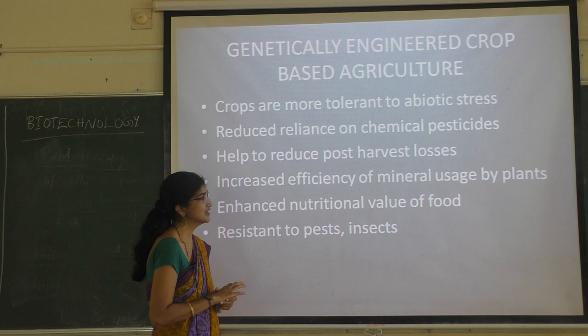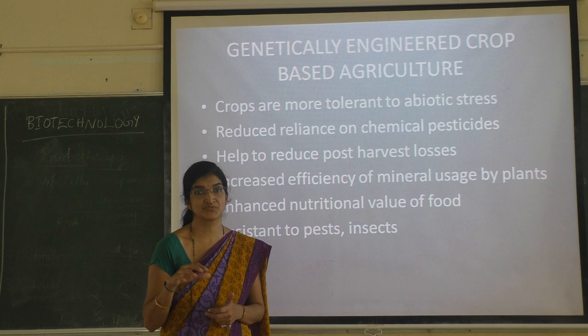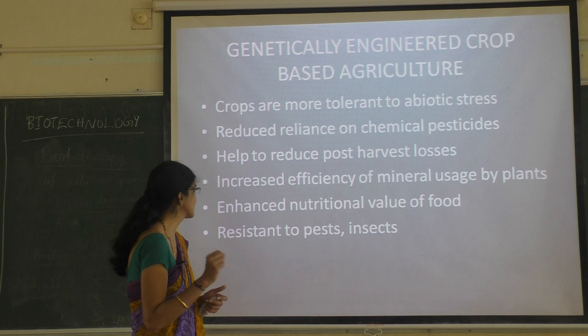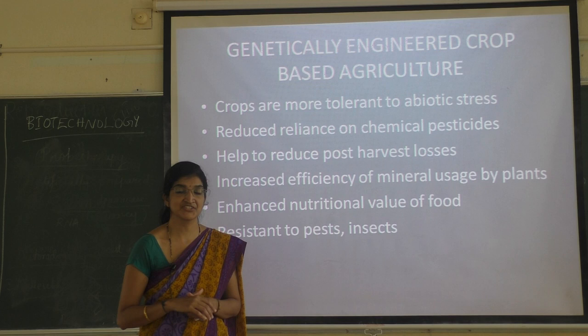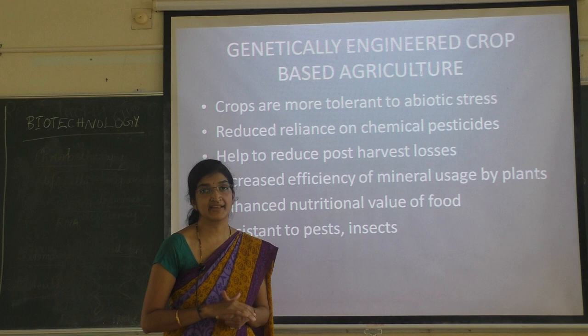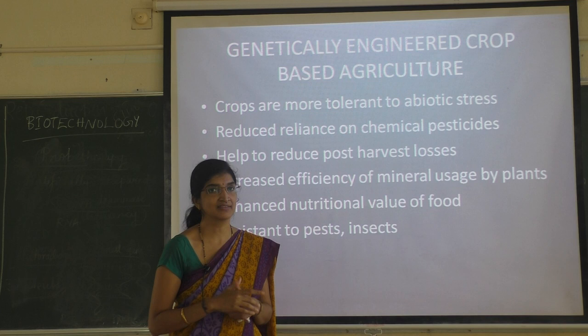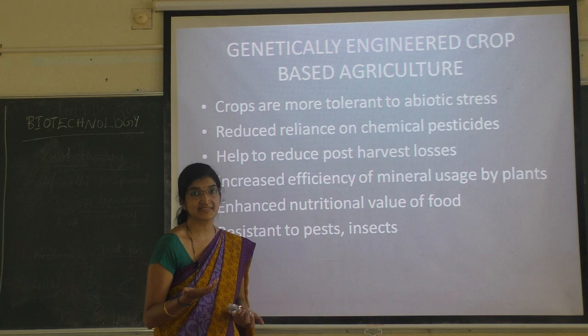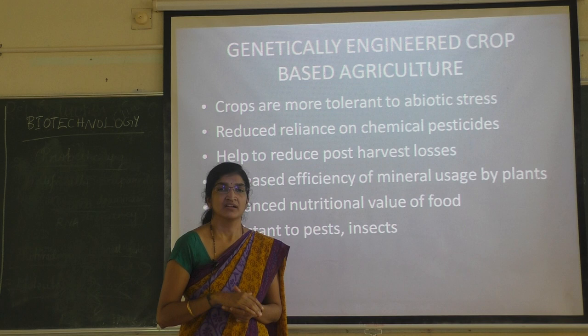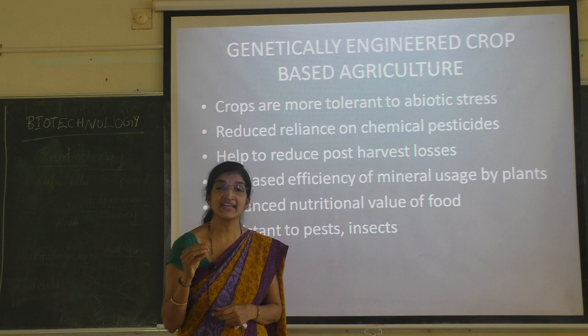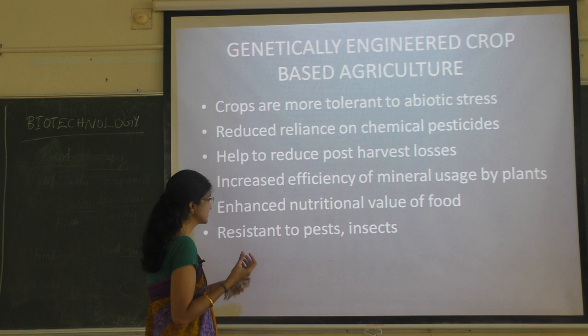There is increased efficiency of mineral usage by the plants — they can properly use the different types of minerals available in the soil. Then, there is enhanced nutritional value of the food. Different vitamins or enzyme production genes can be incorporated inside the crop plants so that the plants are rich in different types of nutrients — for example, golden rice, which is rich in vitamin A, or iron-rich spinach. Nutritionally enhanced foods or crops can be developed.